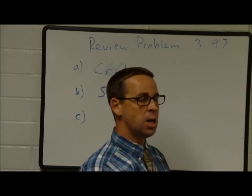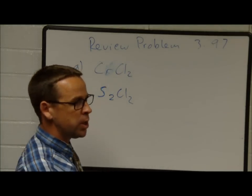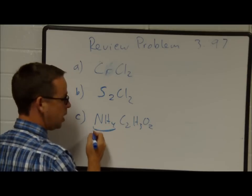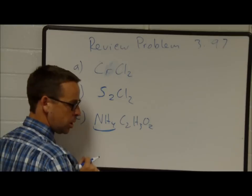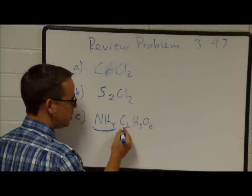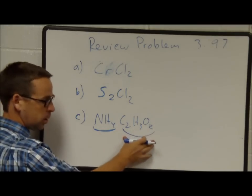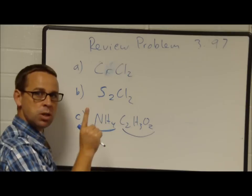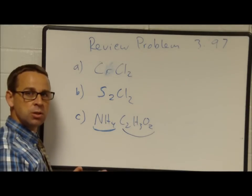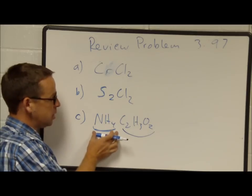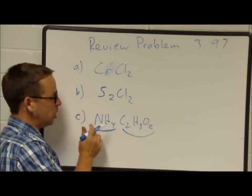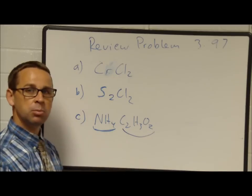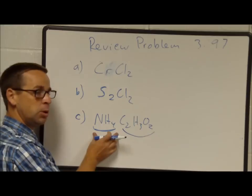NH₄C₂H₃O₂: NH₄⁺ is the ammonium ion (from table 3.5) and C₂H₃O₂⁻ is the acetate ion. Even though all atoms here are nonmetals, ammonium forms a positive charge combining with a polyatomic anion, making this an ionic compound — ammonium acetate.